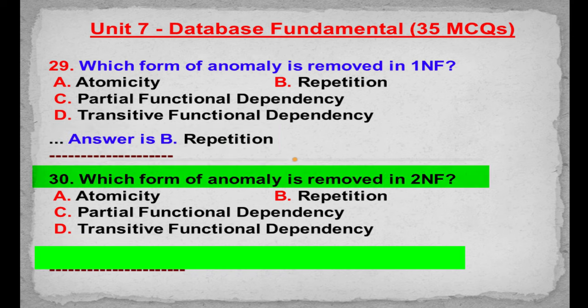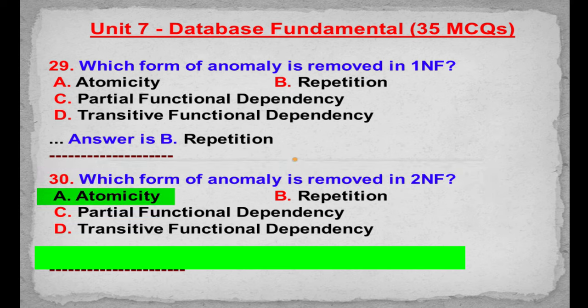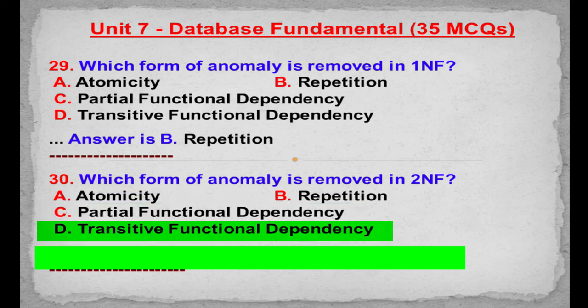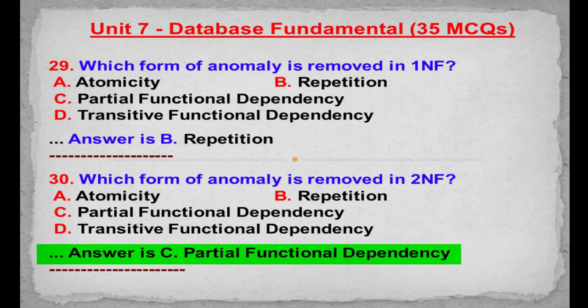MCQ number 30: Which form of anomaly is removed in 2NF? Option A: Atomicity. Option B: Repetition. Option C: Partial functional dependency. Option D: Transitive functional dependency. Correct answer is Option C: Partial functional dependency.